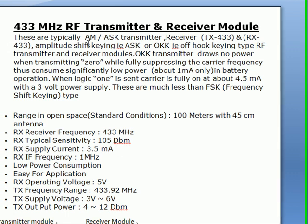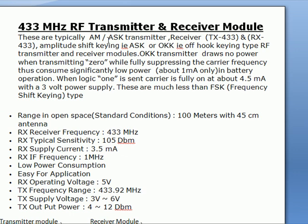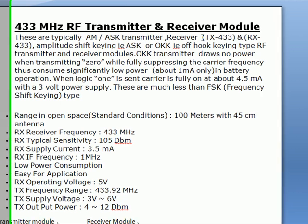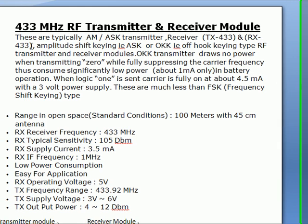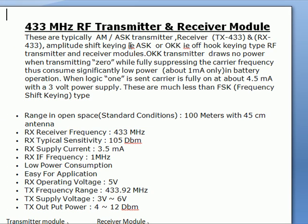These are typically AM — that is, ASK (Amplitude Shift Keying) type modules. The transmitter is referred to as TX433 and the receiver as RX433. They are also called OOK, that is, Off-On Keying type RF transmitter and receiver modules.